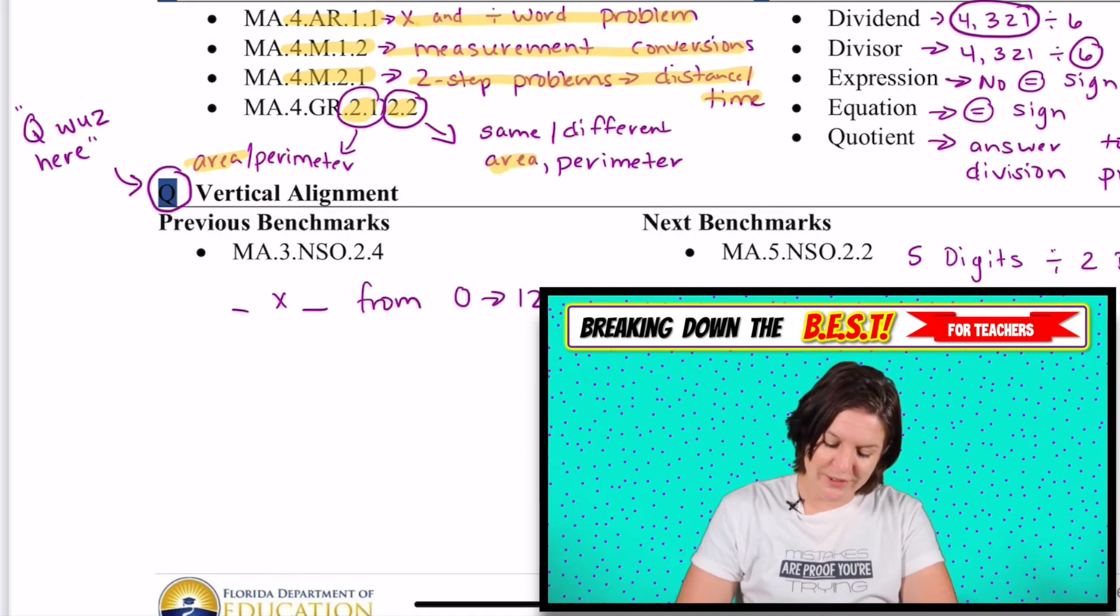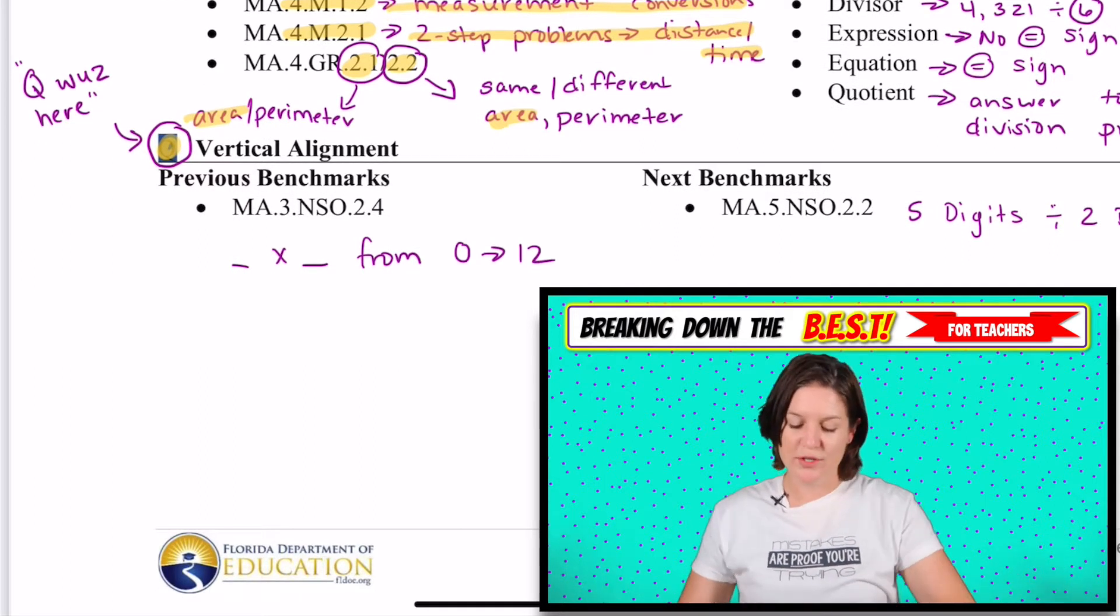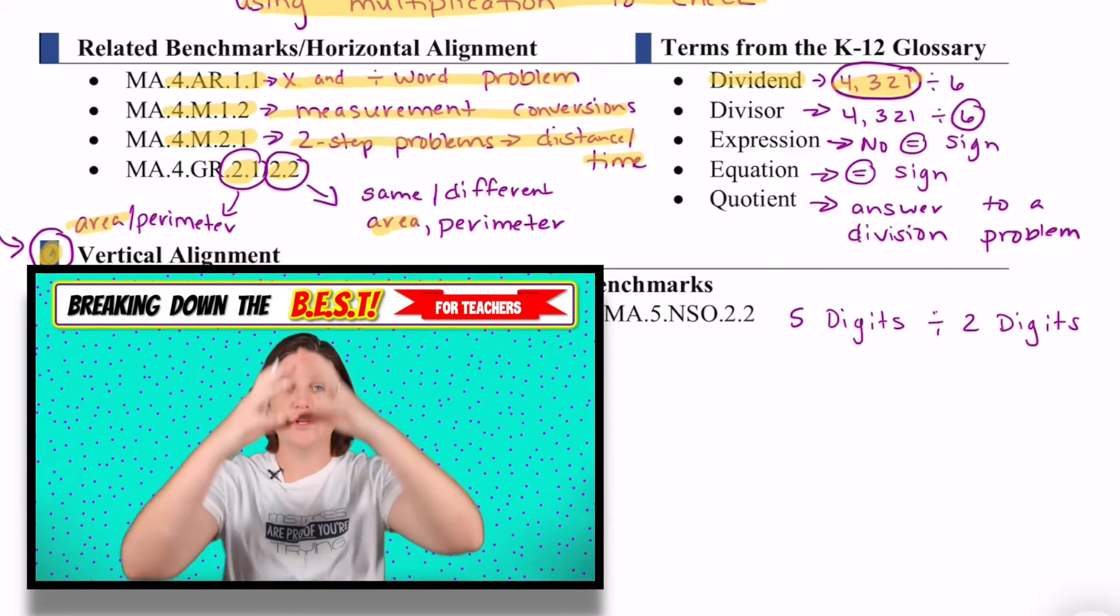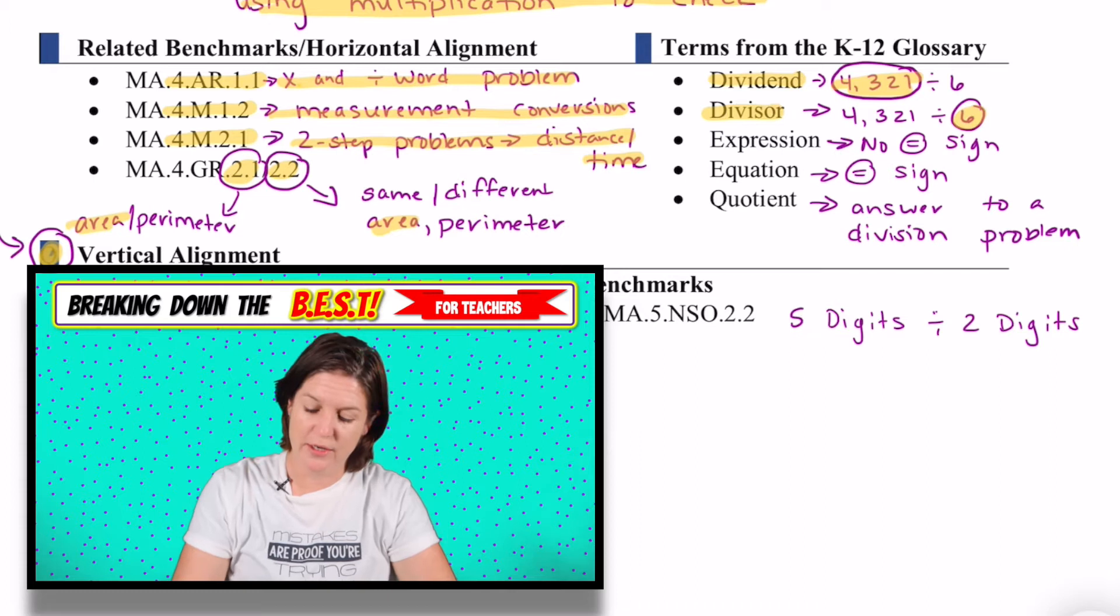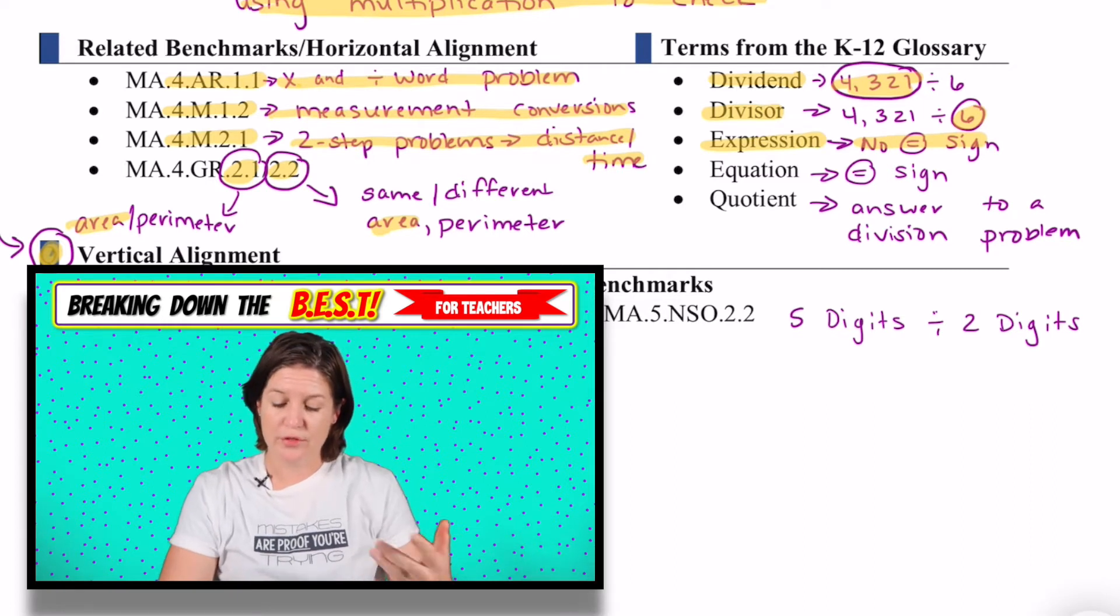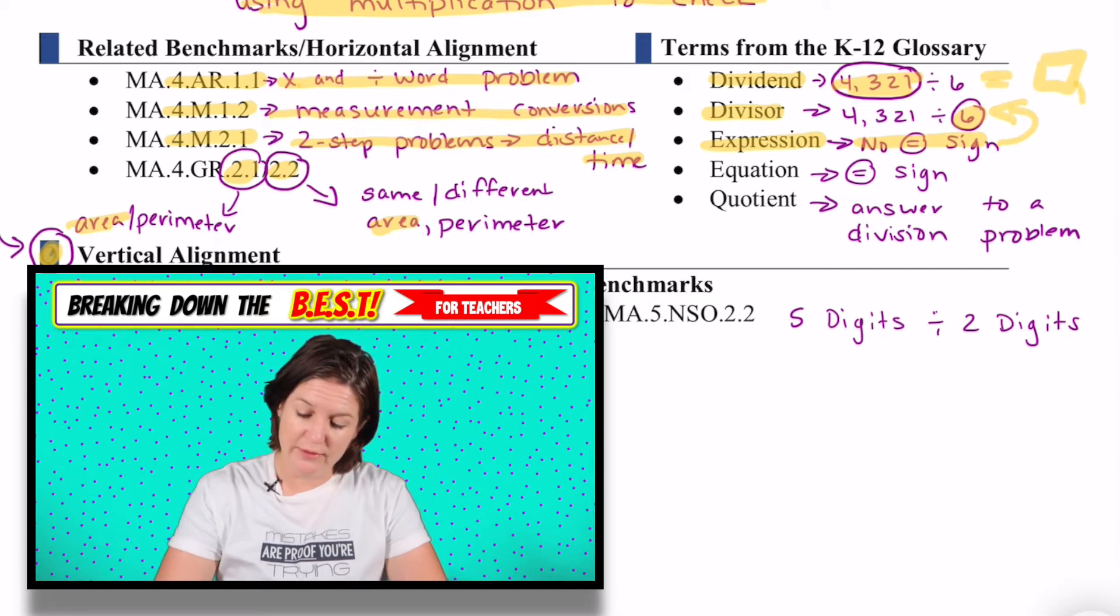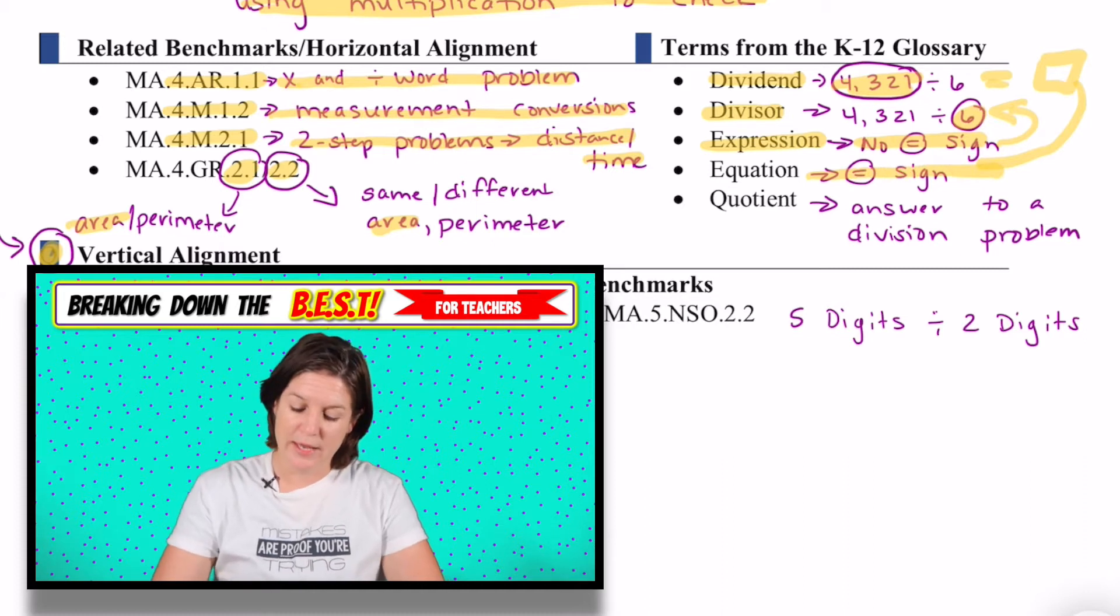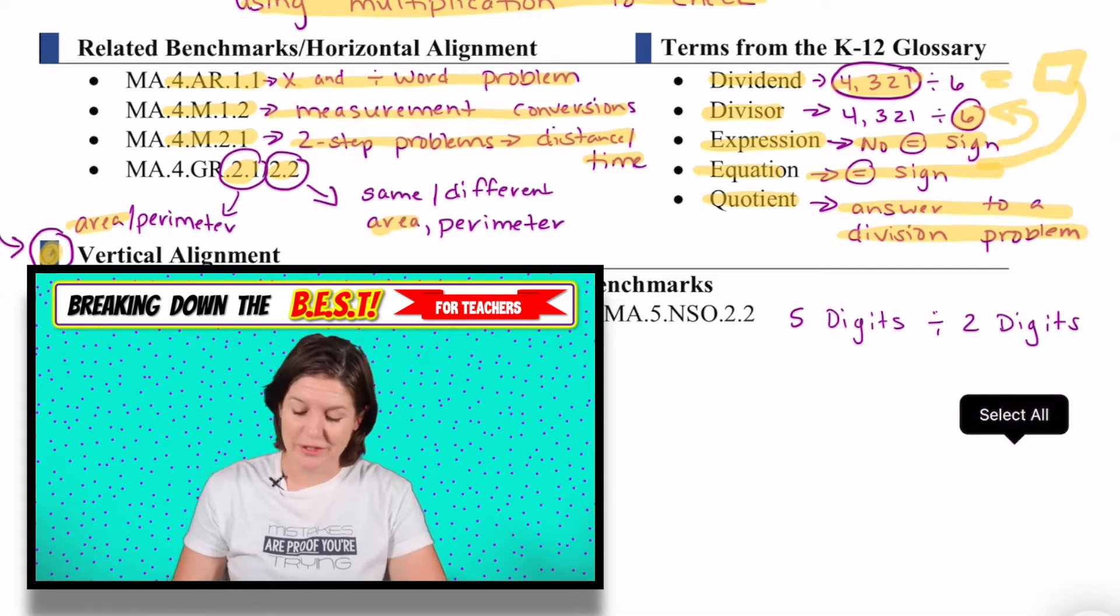Over here, by the way, it says Q was here. That's because I noticed this little Q in the blue thing. I think that was just a typo, but I thought it was funny. Dividend is the total that you are dividing. So you're taking your dividend and dividing it by the other known, which is your divisor. Expression means that there is no equal sign present. For instance, 4,321 divided by 6, there is no equal sign present there. So that is technically an expression. As soon as we throw an equal sign, it becomes an equation. And the quotient is the answer to a division word problem.